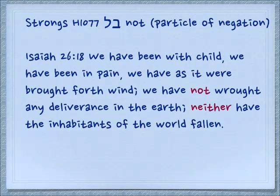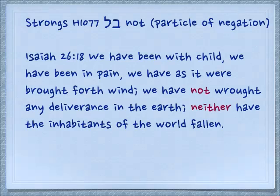Isaiah 26:18: 'We have been with child. We have been in pain. We have, as it were, brought forth wind. We have not wrought any deliverance in the earth. Neither have the inhabitants of the world fallen.' So in both cases, the word Bal is used — the second time it's translated as 'neither.'